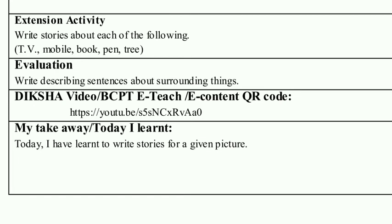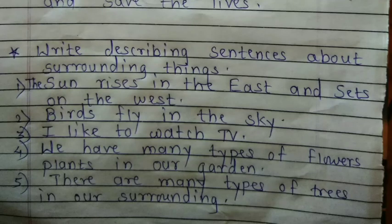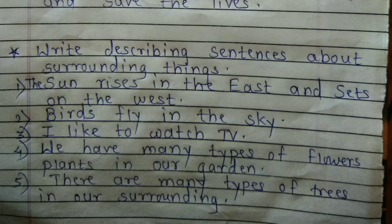Now let's see the answers. One: The sun rises in the east and sets in the west. Two: Birds fly in the sky. Three: I like to watch TV. Four: We have many types of flower plants in our garden. Five: There are many types of trees in our surroundings.